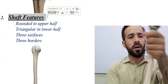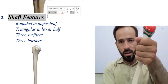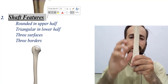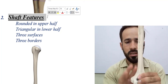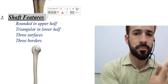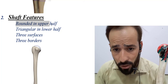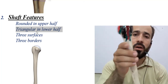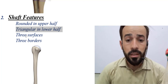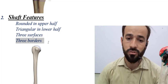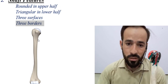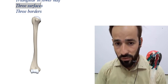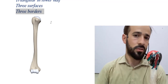Now let's look at the shaft of the humerus bone. The upper shaft is slightly rounded, but as you move downward it becomes triangular — with one angle anteriorly, one posteriorly, and one here. So the upper half is rounded and the lower half is triangular. This triangular lower half bears three surfaces and three borders, which will be discussed in the next lecture.